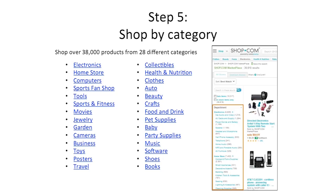Step 5 is Shop by Category. There are over 38,000 products in our Shop Marketplace across 28 different categories — electronics, a home store, computers, sports and fan store, tools, and many more. These are items people are already buying, and now you'll be able to generate a tremendous amount of extra cash back and IBV.